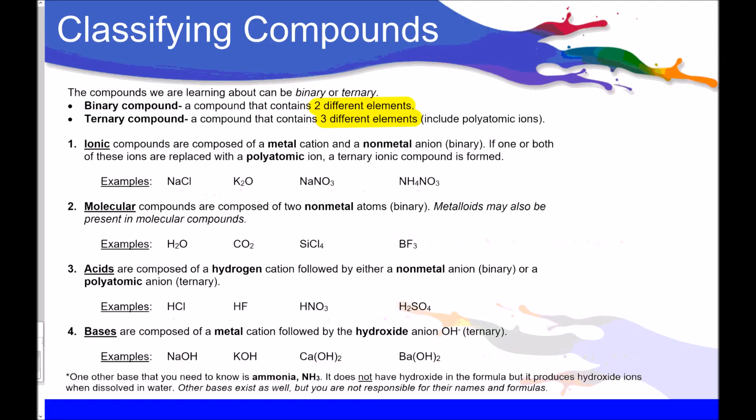Okay, so classifying compounds. That's the main point of this particular video, is I need you to be able to look at a list of different compounds and know what type they are. First, I need you to know the difference between binary and ternary. So binary compounds are compounds that just have two different elements. So maybe a metal and a nonmetal, or two nonmetals. There's just two different types of elements, like nitrogen and oxygen, for example.